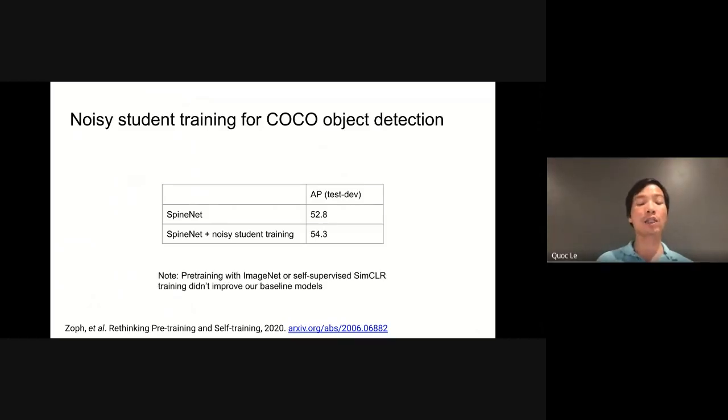Note that this gain is quite significant because we also tried other methods to improve the baseline and failed. For example, retraining the backbone on ImageNet classification didn't improve the baseline. Or you can use a checkpoint from SimCLR as a backbone, but that also gets worse results than 52.8. This improvement is the first time we see that using unlabeled data can improve accuracy of a strong baseline model.